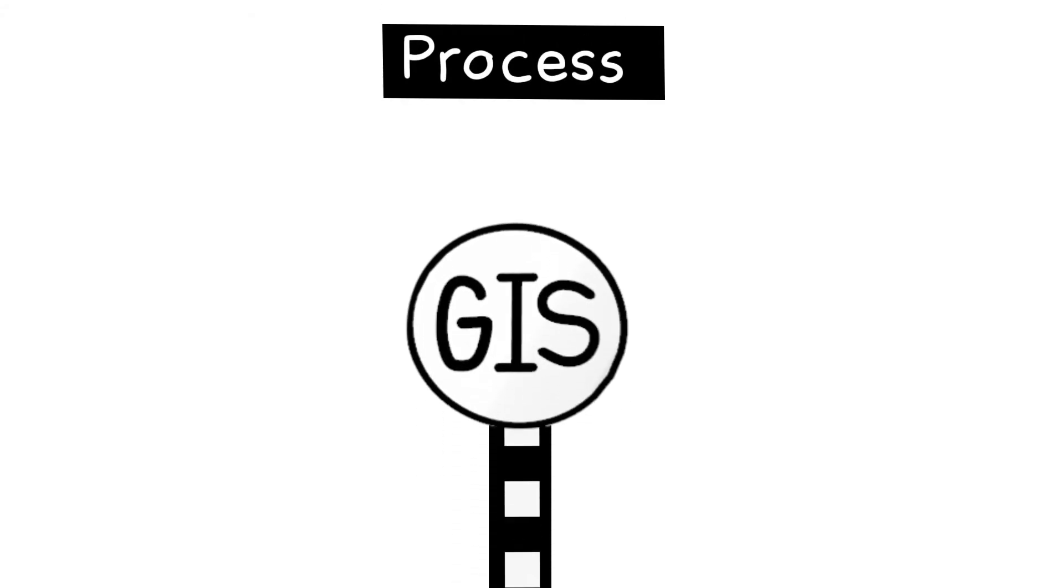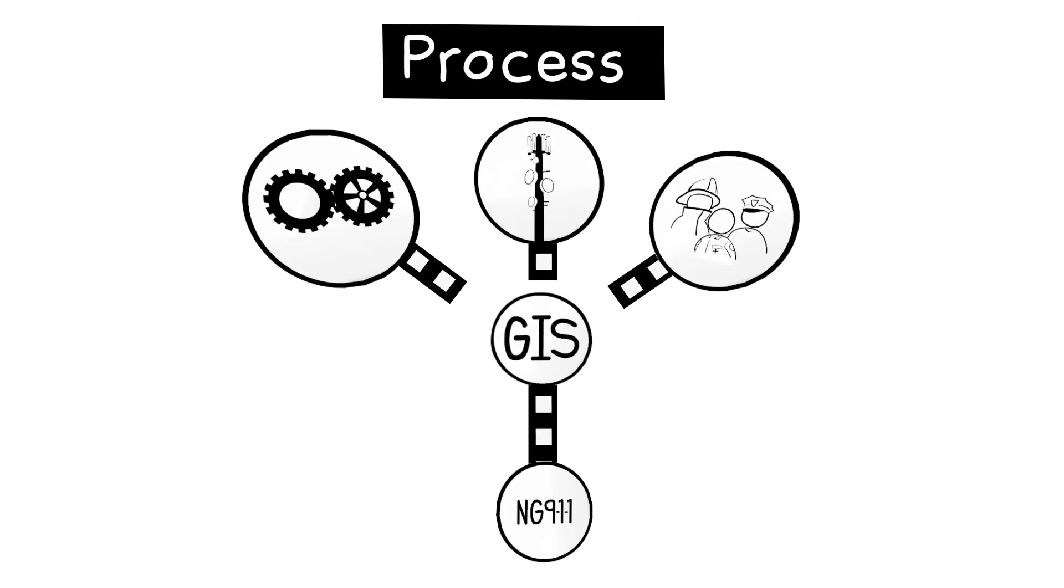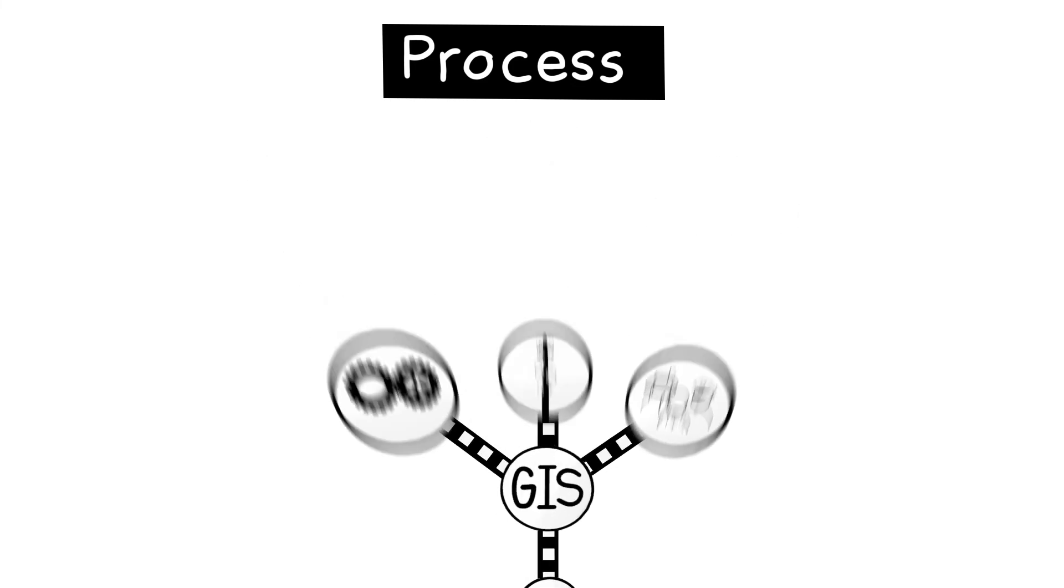The third key pillar is process. The GIS data leveraged by NG911 needs to be current, complete, and relevant. This data is dynamic, requiring skilled professionals and efficient processes to ensure that data quality and interoperability standards of NG911 are met.